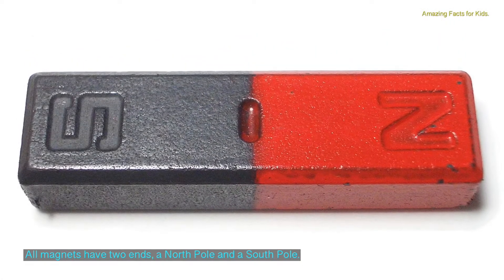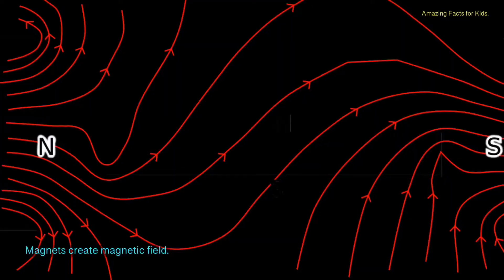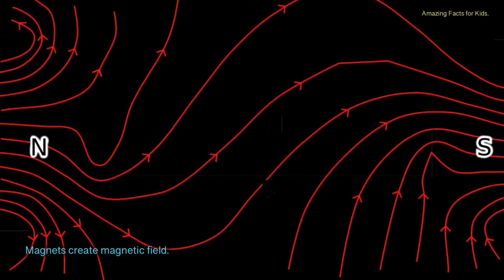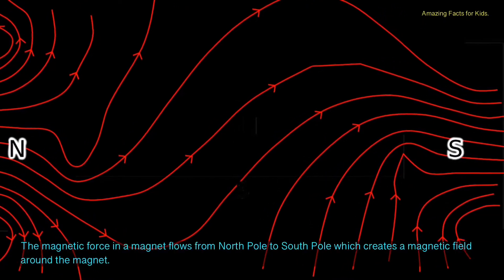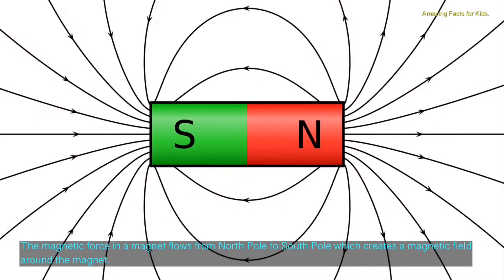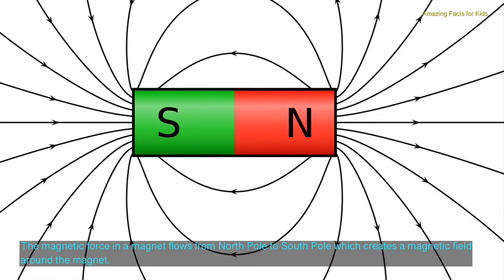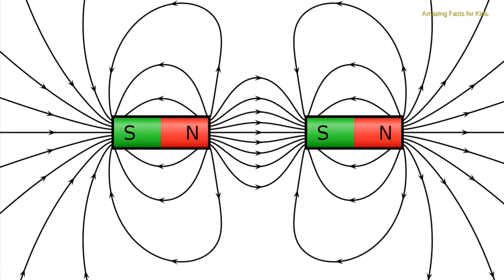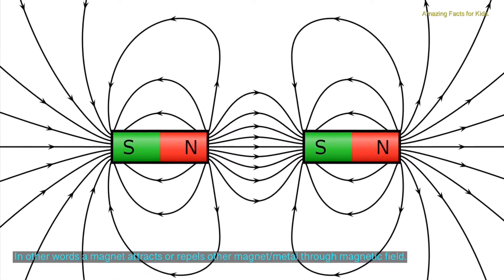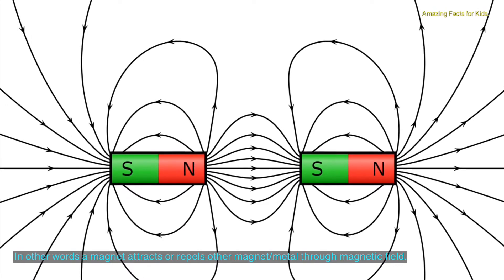All magnets have two ends: a north pole and a south pole. Magnets create a magnetic field. The magnetic force in a magnet flows from the north pole to the south pole, which creates a magnetic field around a magnet. In other words, a magnet attracts or repels other magnets or metals through its magnetic field.